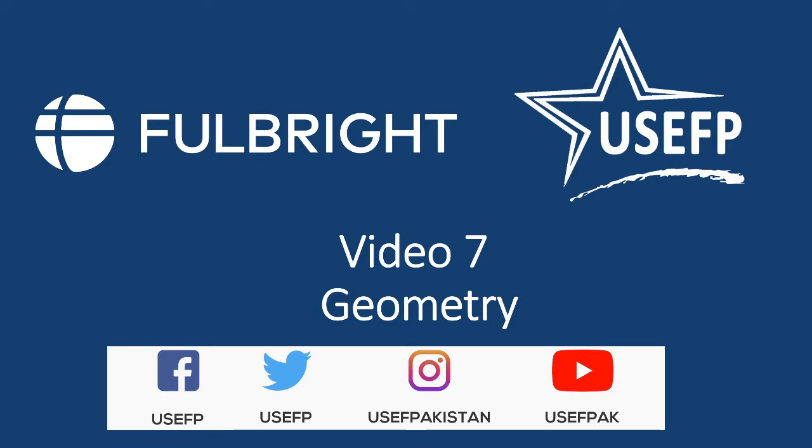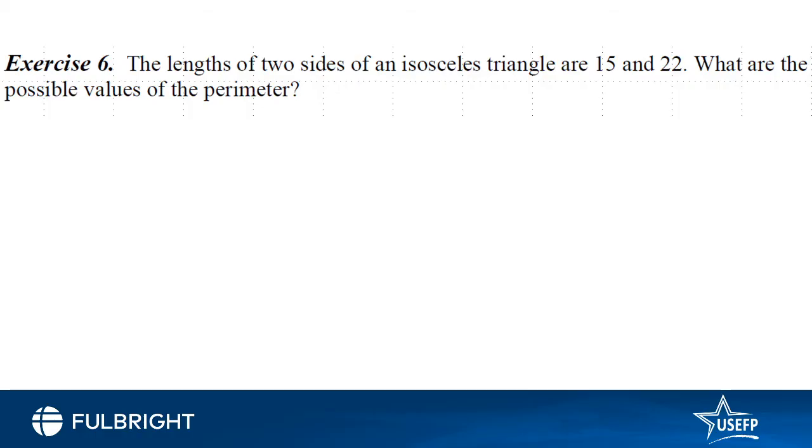The length of two sides of an isosceles triangle are 15 and 22. What are the possible values of perimeter? So an isosceles triangle is one in which two sides are equal. So they have given us two of the sides, 15 and 22. For a triangle to be isosceles, the third side needs to be either 15 or 22.